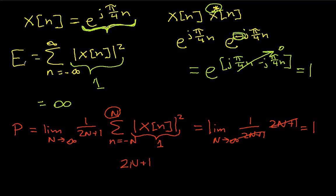So this tells us the energy is infinite and the average power is 1, which makes sense because every term in this summation has a value of 1. We're dividing by the number of terms in the summation, so if every term equals 1, adding them up and dividing by the number of terms gives 1.